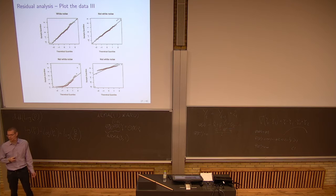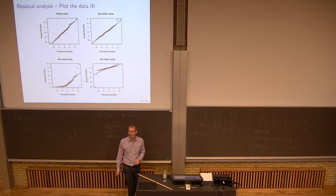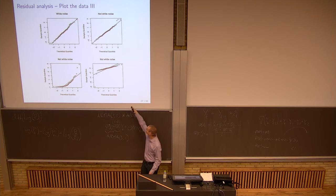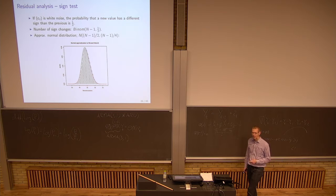If you look at the so-called QQ plot — quantile-quantile plot — likewise for the two top ones, you cannot see the difference. Whereas for the two bottom ones, you can see that one shows clear skewness, and the other clearly looks like points on a straight line except for two outliers. But for the top one where you have the change in variance over time, you do not see that unless you plot the residuals over time.